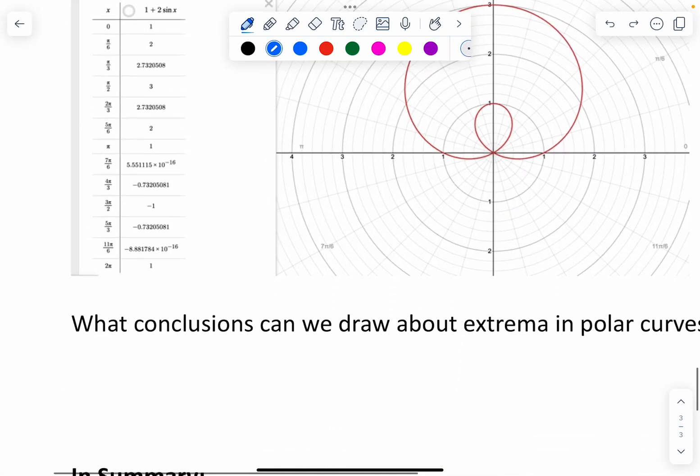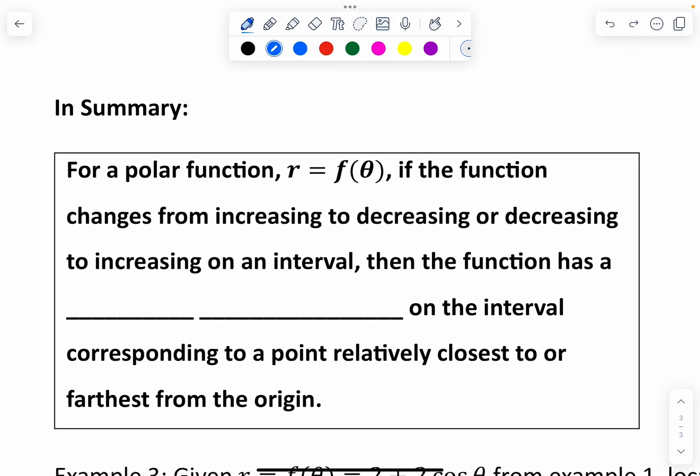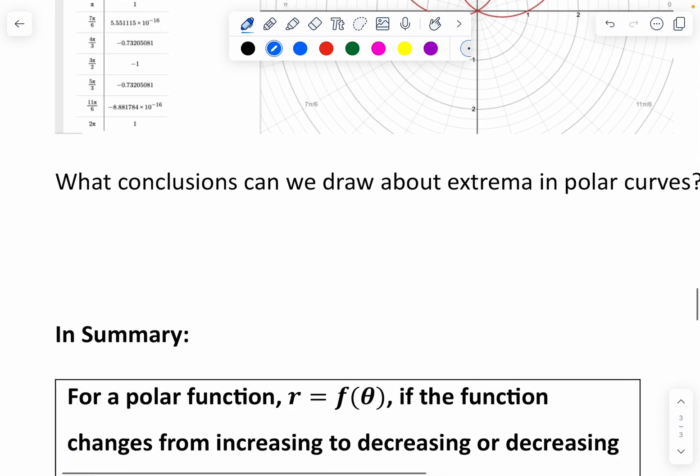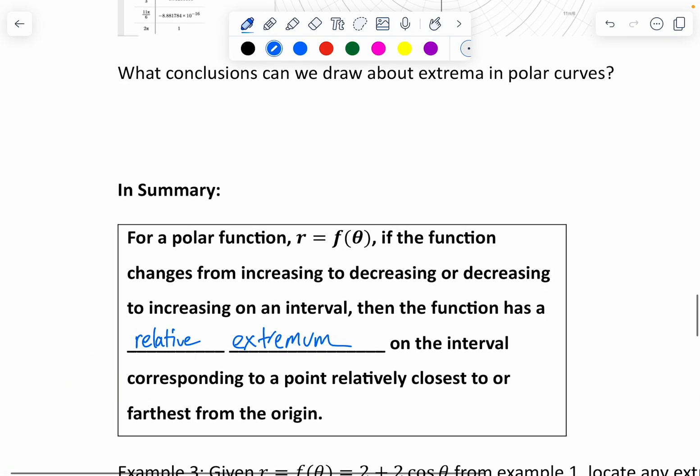What the pre-cal curriculum tells us is that for a polar function, r equals f of theta, if the function changes from increasing to decreasing or decreasing to increasing on an interval, then the function has a relative extremum on the interval corresponding to a point relatively closest to or farthest from the origin.